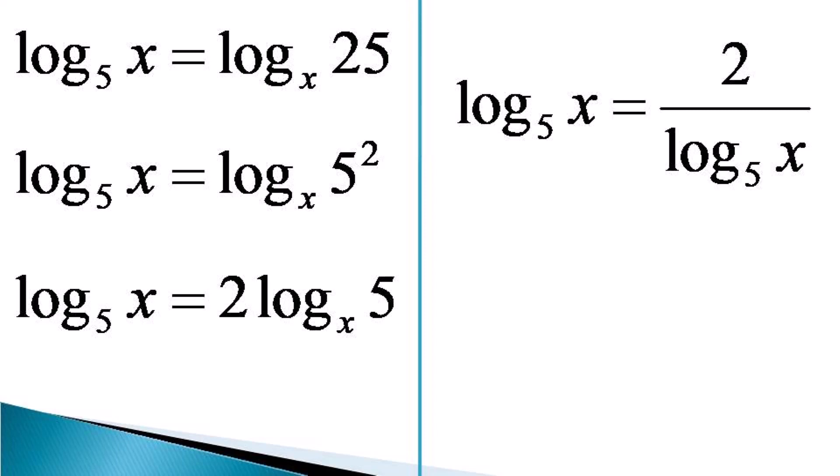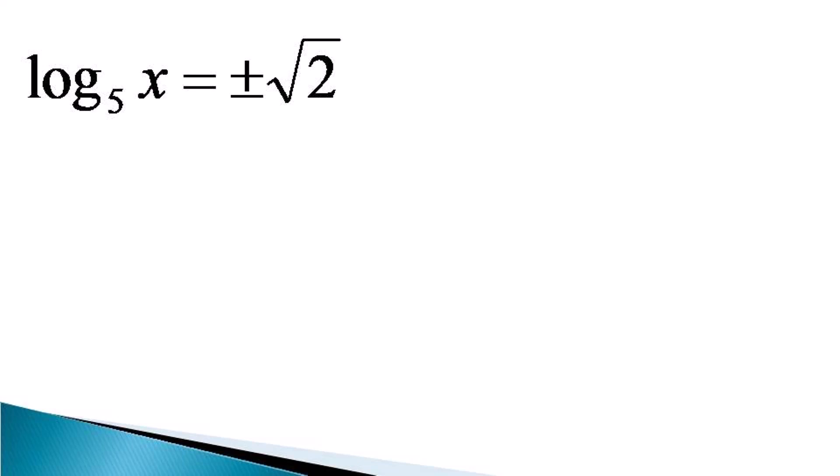Doing cross multiplication, we get log x to the base 5 whole square is equal to 2. This comes in a quadratic form and taking square root of both the sides, we get log x to the base 5 is equal to plus minus root 2.